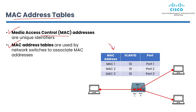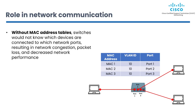The MAC address table stores information about the MAC addresses of devices connected to the switch and their corresponding network port. When a data packet arrives at the switch, the switch checks its MAC address table to determine the destination of the packet and forwards it to the correct network port. Without MAC address tables, switches would not know which devices are connected to which ports, resulting in network congestion, packet loss, and decreased performance. MAC address tables also enable switches to segment network traffic by VLAN, ensuring data packets are only forwarded to devices in the same VLAN, improving security and enabling administrators to control traffic more effectively.